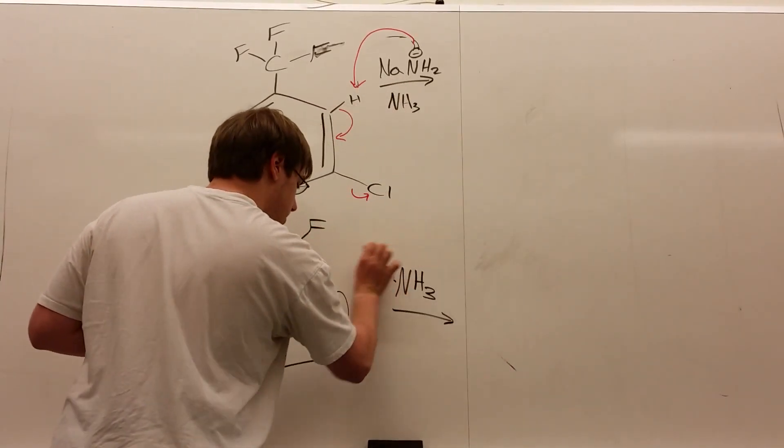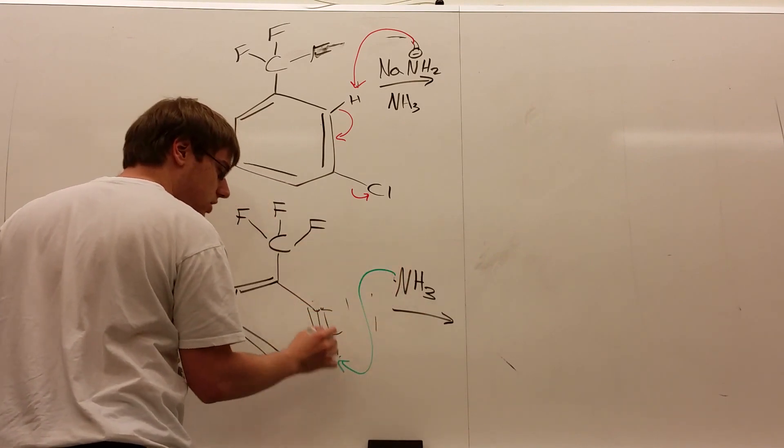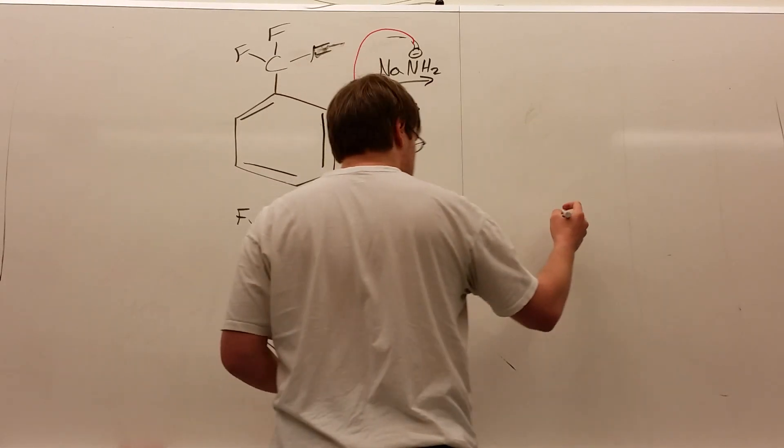So, let me draw these arrows in green so they're easier to see. So that NH3 is going to attack the meta position, and the electrons will swing up to the ortho position.